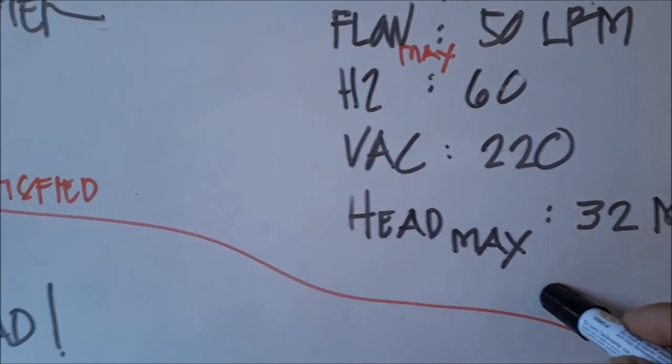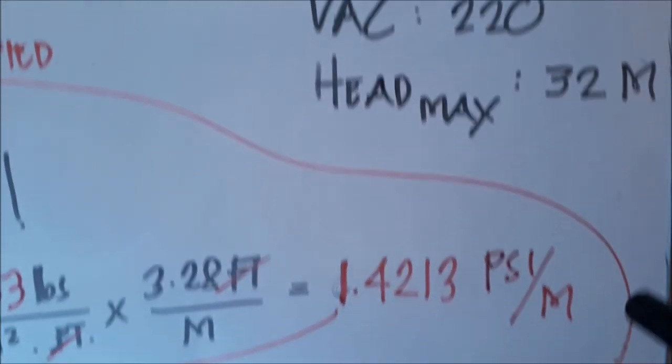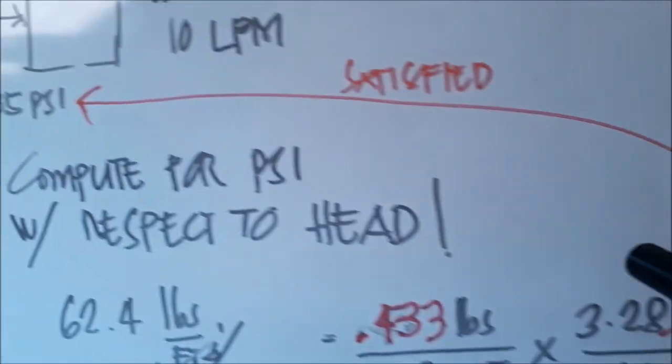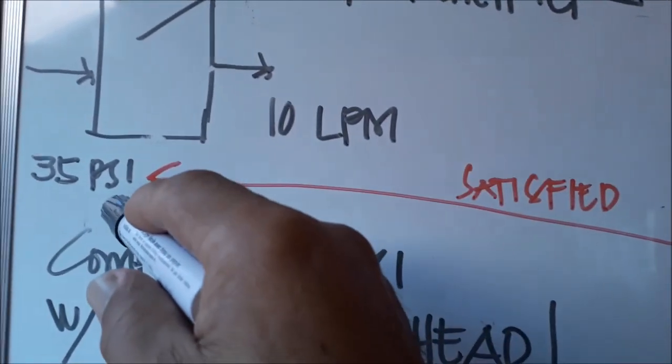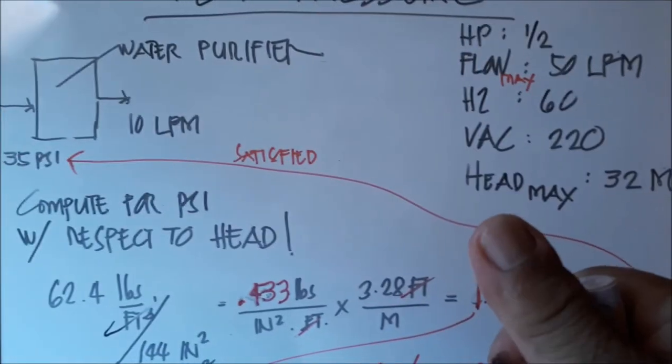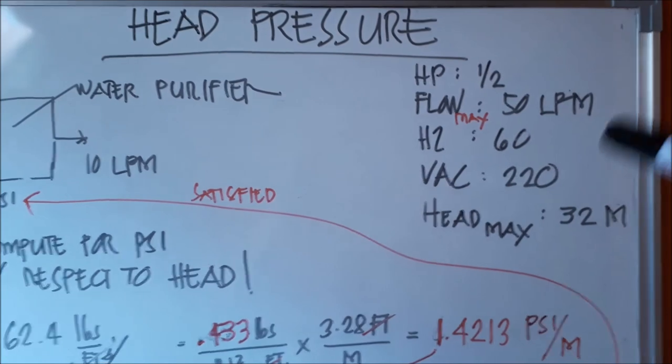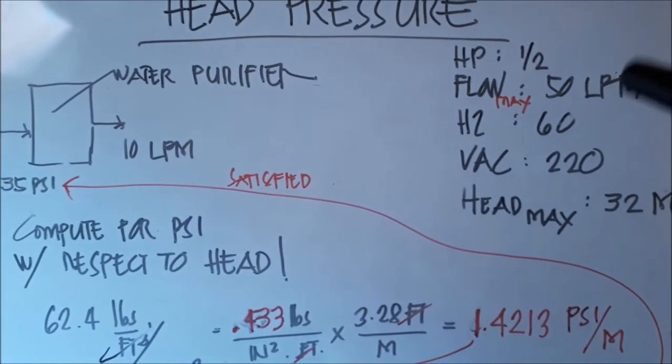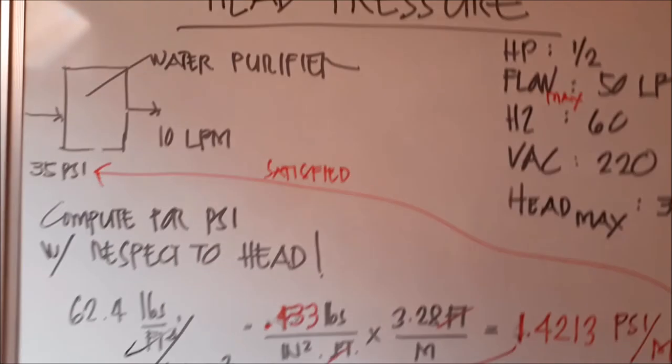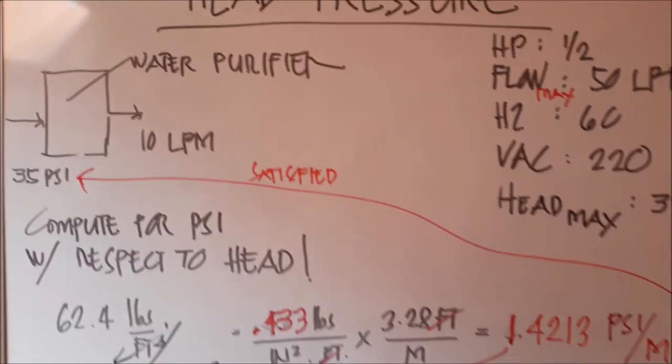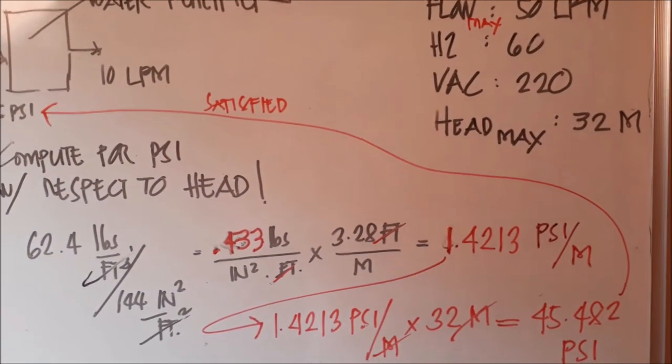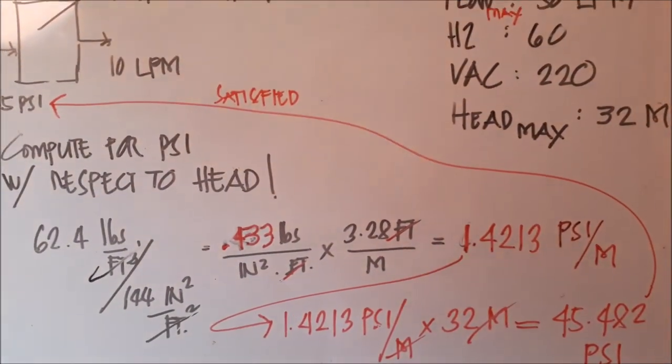Head is 32 meters, equivalent to 45 PSI. This is higher than the water filter inlet pressure requirement. Let's choose one-half horsepower instead of three-fourths. That's the conclusion of our topic from meter, converting it to PSI. Thank you very much.